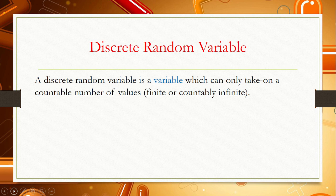What is a discrete random variable? A discrete random variable is a variable which can only take on a countable number of values, finite or countably infinite. This type of random variable is all about countable numbers — like the total number of something. This is countable data.